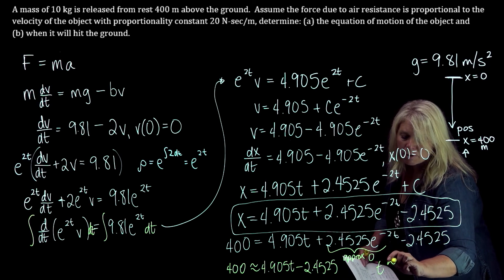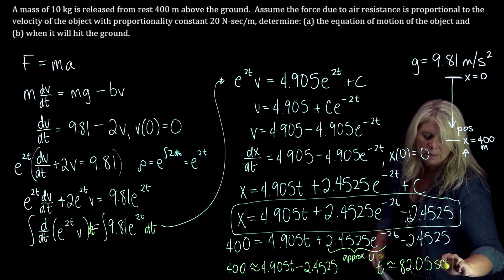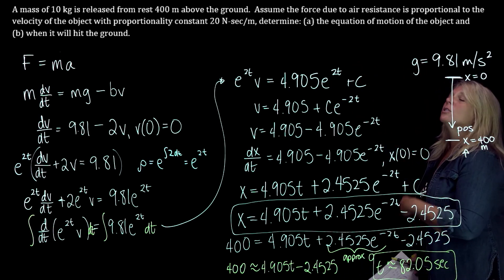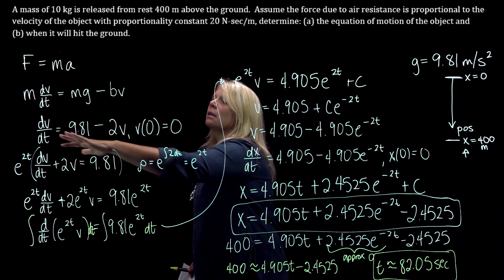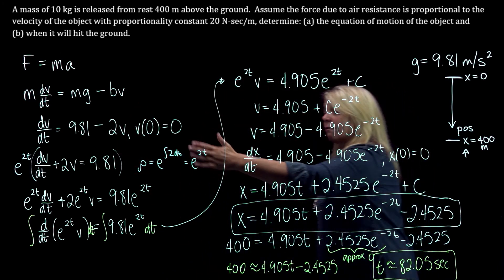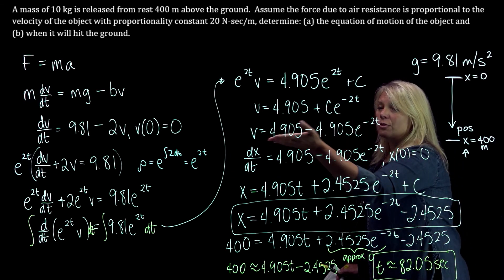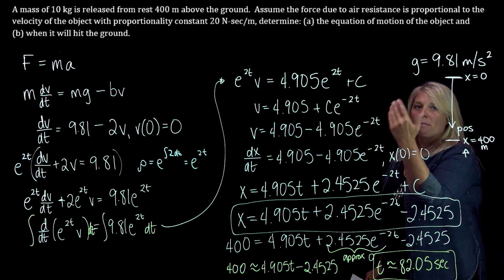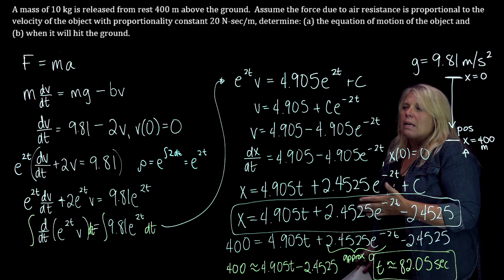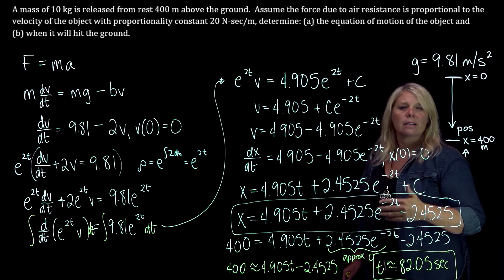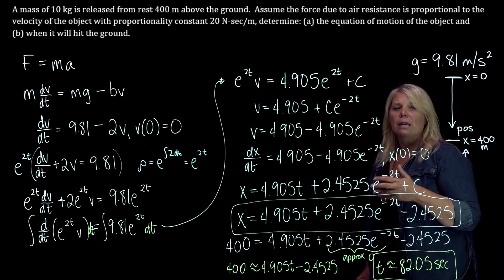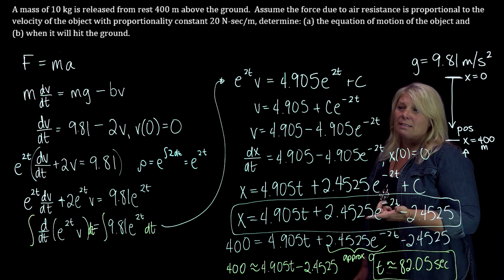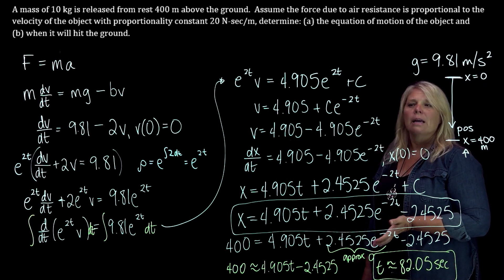What I got was t is approximately 82.05 seconds. So there's a lot of interesting stuff here. One is that we didn't start out with a differential equation — we had to write our own by thinking about the forces acting on the object. And the other important idea is that the first differential equation we solved wasn't quite done; we needed to treat that solution as a differential equation and solve another one to answer the question. It's really all about paying attention to what the symbols mean and thinking through the meaning of these expressions. This is like one of the homework problems, so if you haven't tried that one yet, go ahead and do that.